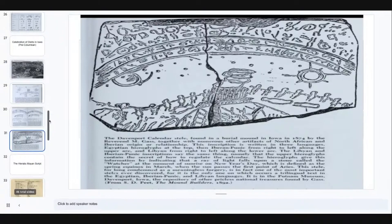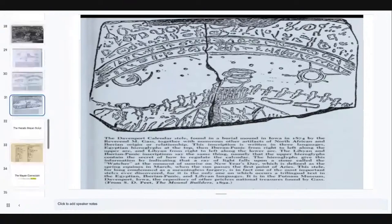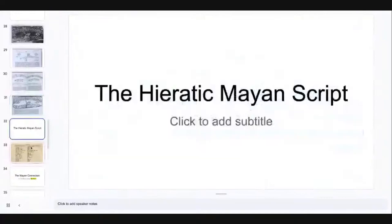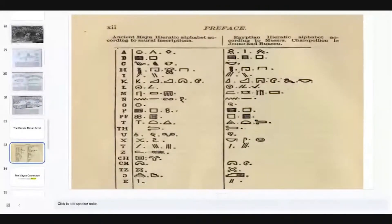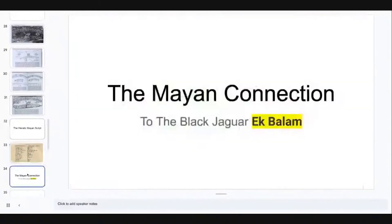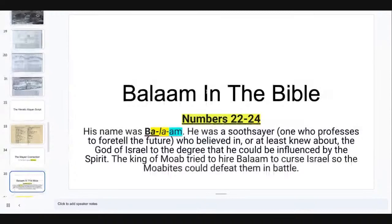This is a quick overview of the correspondences between the Maya hieratic alphabet, according to mural inscriptions found in caves, burial mounds, and various artifacts in Central America. Now, let's talk about the Mayan connection to the Black Jaguar or the Black Panther — the Ek Balam. In that word Balam, you may have heard this name before in the Book of Numbers.